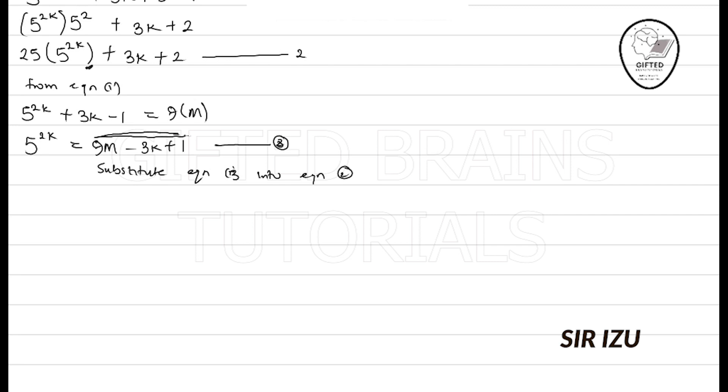So, we have 25 into 9m - 3k + 1. Then plus 3k and plus 2. So, if I expand this, 25 times 9 will give me 225, 225m - 75k + 25 plus 3k plus 2.